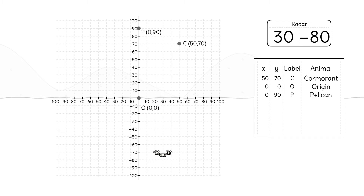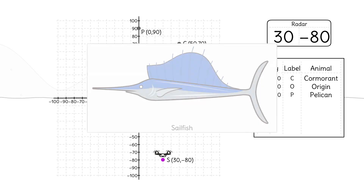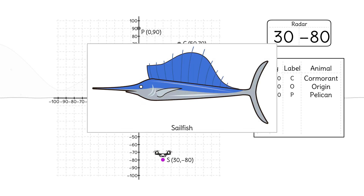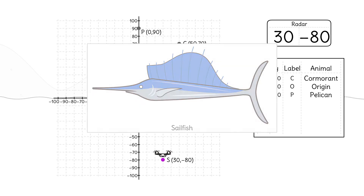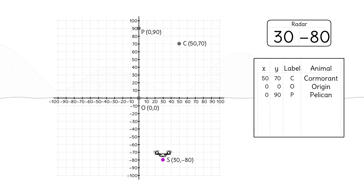The drone dives under the water until it's at the point (30, -80) and takes a great picture of a sailfish. We'll call this location point S and add the data to our table.